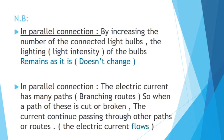Now let's see what happens in parallel connection — it's exactly the opposite to the series connection. In parallel connection, by increasing the number of connected light bulbs, the lighting or the light intensity of the bulbs remains as it is. The light strength doesn't change. Why? Because in parallel connection each lamp has its own branch and its own route, so the electricity is not divided by the number of lamps. Each route has its own electric current not affected by the other branches. No matter how many lamps you have, the electricity remains the same, so the light intensity remains the same.